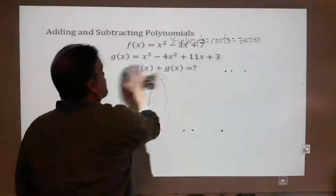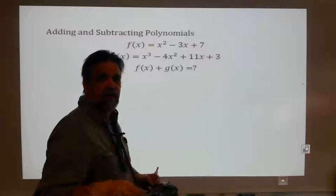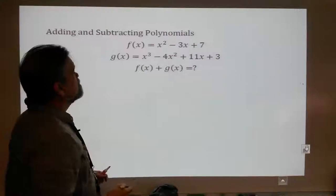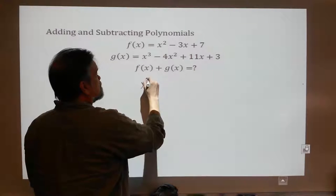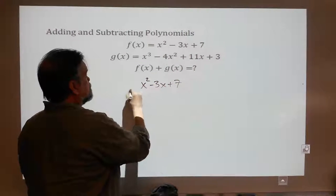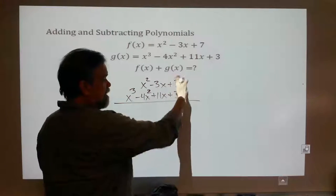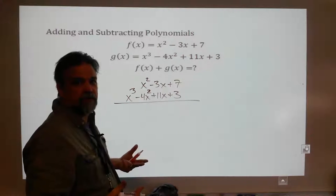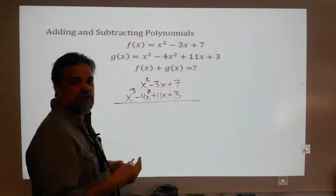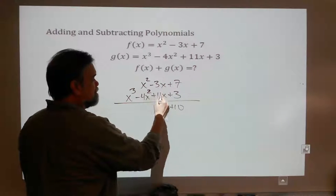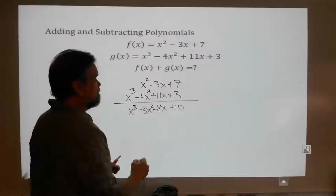Adding and subtracting polynomials. Polynomials are a lot like numbers, so when you're adding or subtracting polynomials, it's just like adding and subtracting numbers. Here's f(x) = x squared minus 3x plus 7, and g(x) = x cubed minus 4x squared plus 11x plus 3. Add them up. I line them up to the right just like I would line up numbers, keeping my terms above each other because place value is important. 7 plus 3 is 10, negative 3 plus 11 is 8, 1 minus 4 is negative 3, and x cubed. That's our answer.